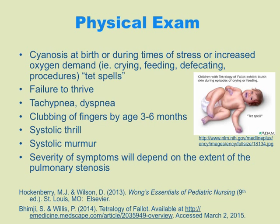On physical exam, the primary finding is cyanosis. Sometimes that cyanosis is immediate at birth, and other times it shows up a little later when they get what are called TET spells. That happens during times of stress or increased oxygen demand — the most common being crying, feeding, defecating, or any procedure. We often see it in babies when drawing blood, and we'll see them turn blue on their hands, feet, and lips. Not all babies have this, and it's not completely diagnostic since other things can cause it, but it's what you think of with Tetralogy of Fallot.